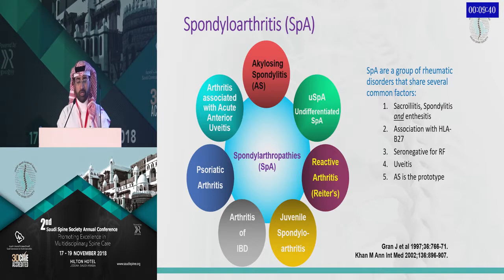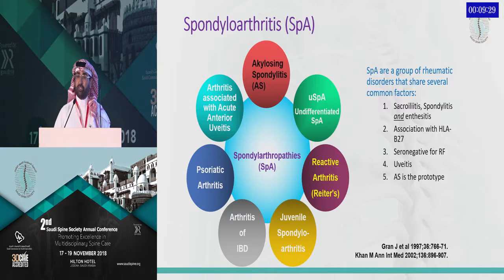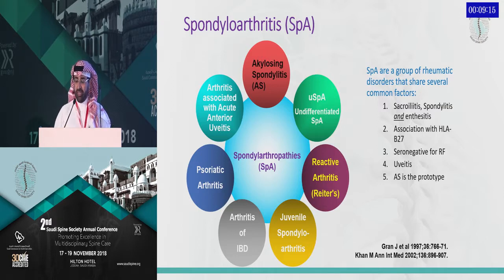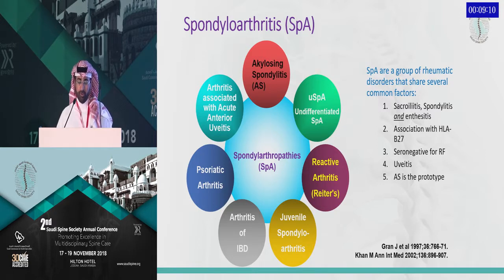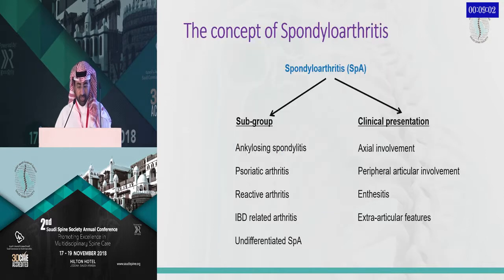I'm sure you know about the spondyloarthritis concept, where we have a group of rheumatic disorders that share several common factors, including sacroiliitis and spondylitis. There is also the element of enthesitis, which is the inflammation at the insertion of tendon, ligament, or capsule to the bone, and the association with HLA-B27 as a genetic marker. These disorders have seronegativity for rheumatoid factor and also uveitis as an extra-articular manifestation.